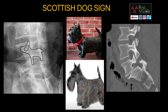The Scottish dog sign is the normal appearance of the spine on oblique projections. The transverse process is represented by the nose of the dog, the superior articular facet by the ear, the inferior articular process by the front leg, and the pars interarticularis by the neck. If there is a break in the pars interarticularis, this is spondylolysis, and is called the Scottish dog collar sign, which is abnormal.